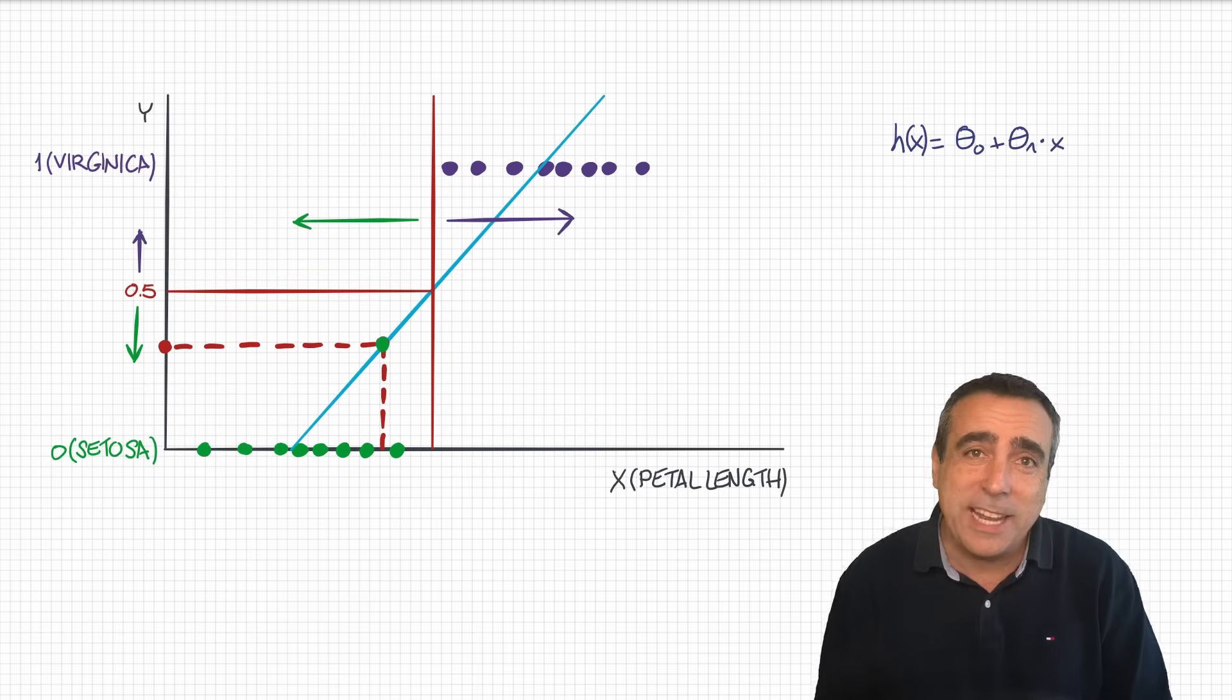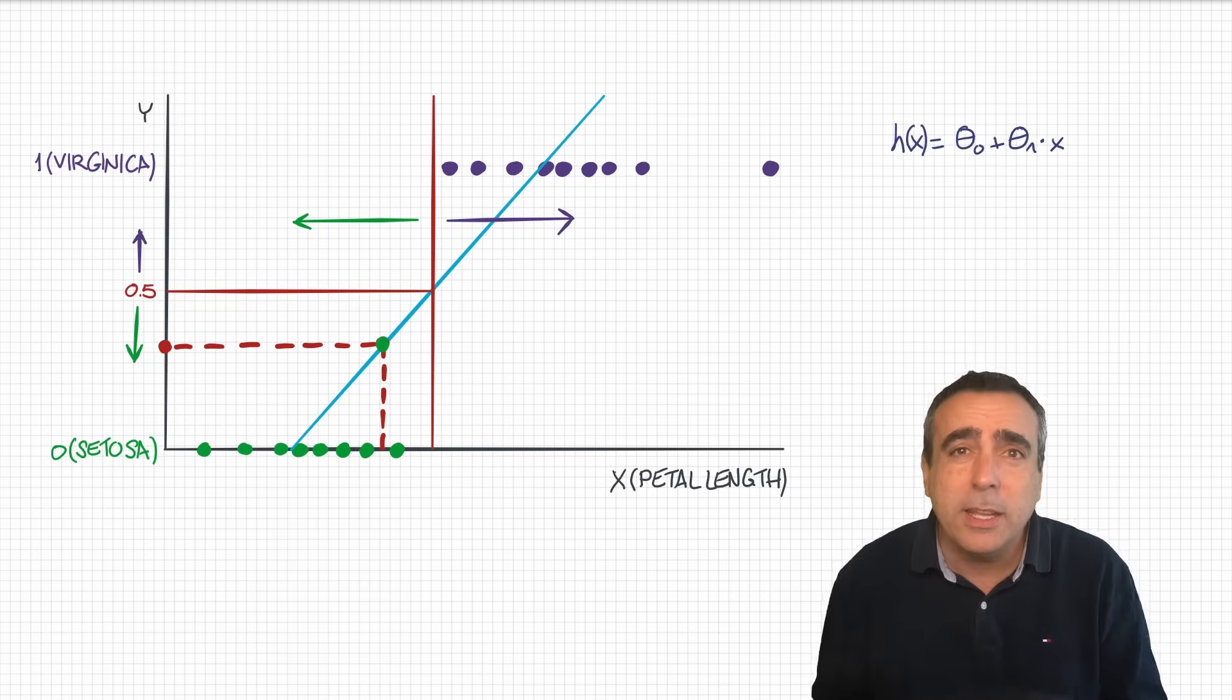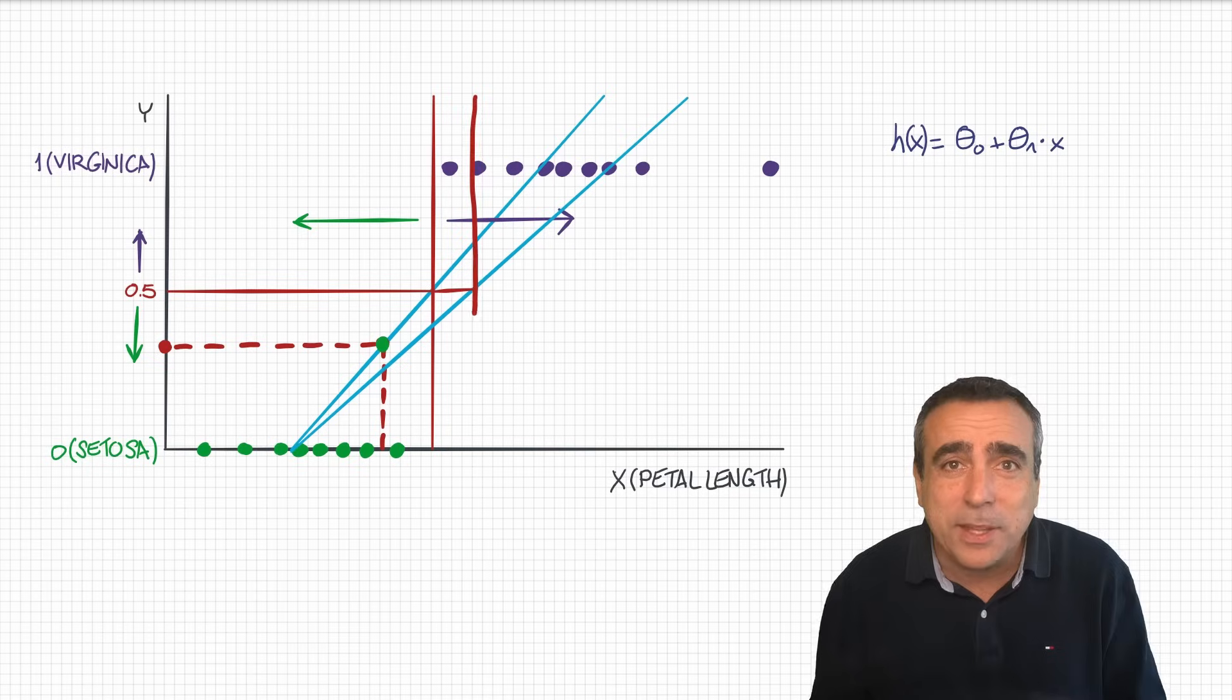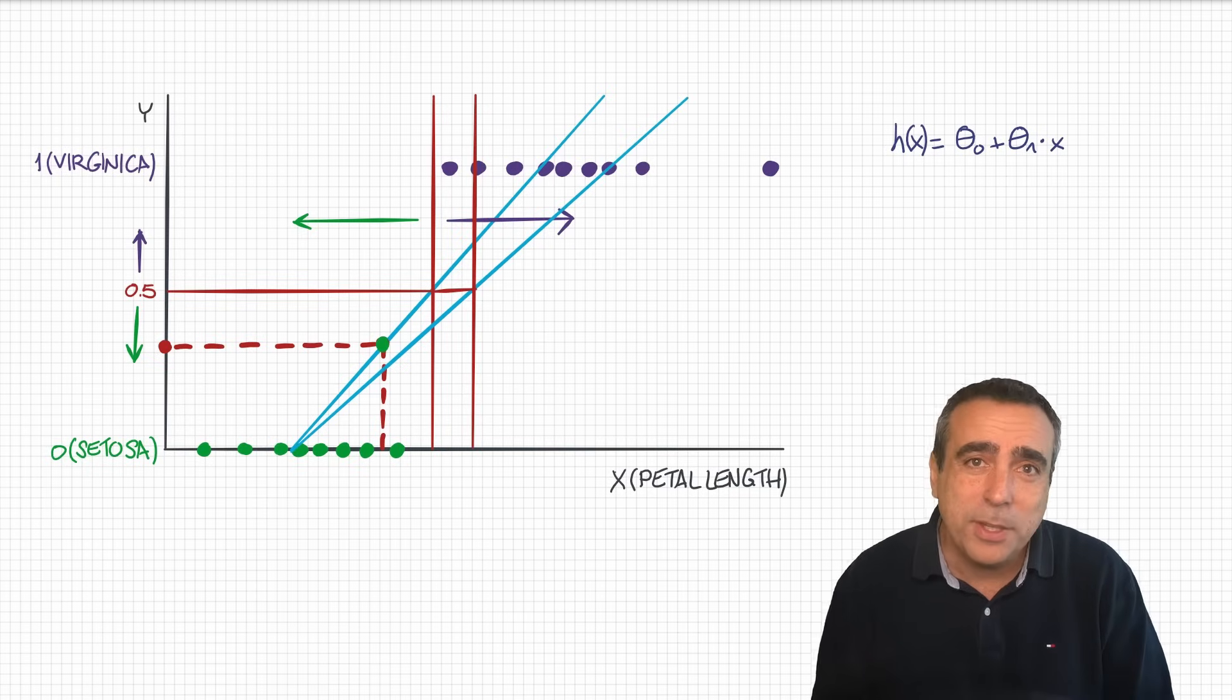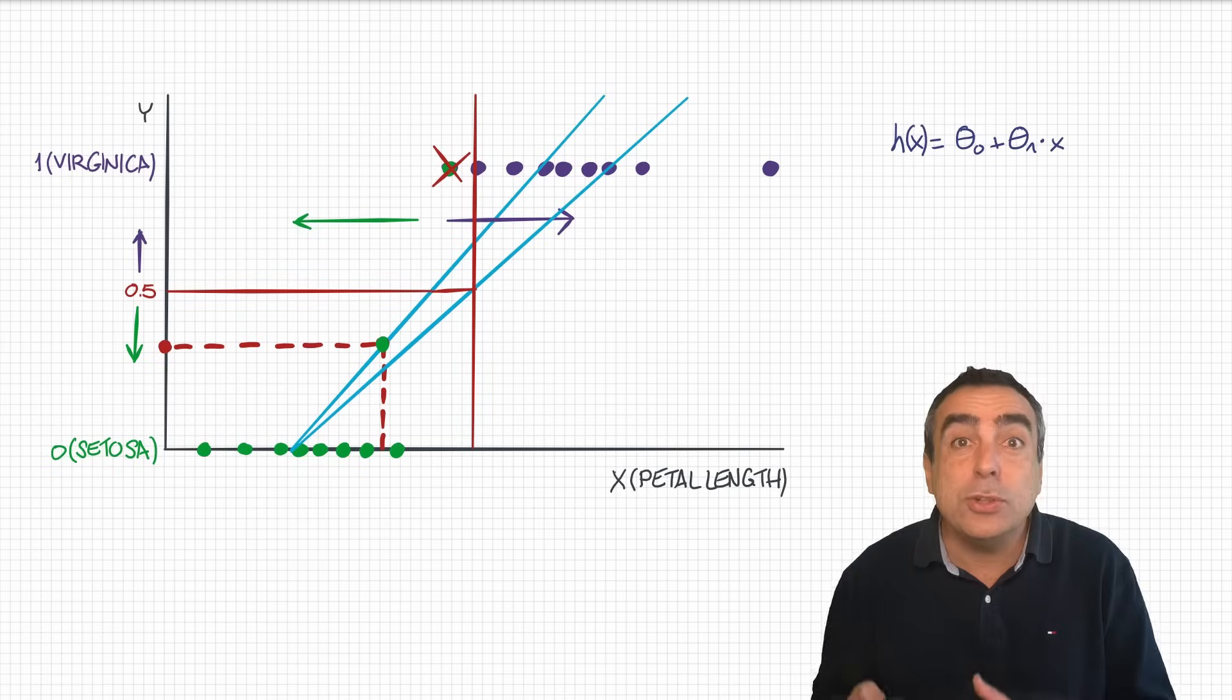But unfortunately, this was just luck. Because imagine that I have now another example of a virginica, right here. Just because I happen to have this additional example that is quite big, my linear regression would move. The 0.5 line would move too, and the model wouldn't work well. For example, it would classify this flower as a setosa, which is wrong. The good news is that there's a solution for this.